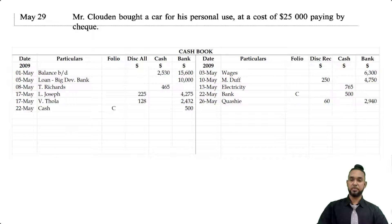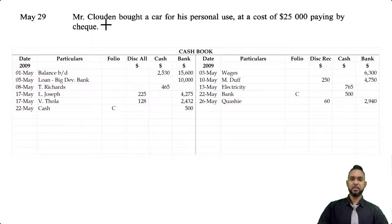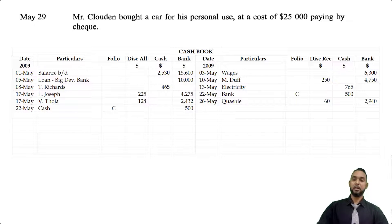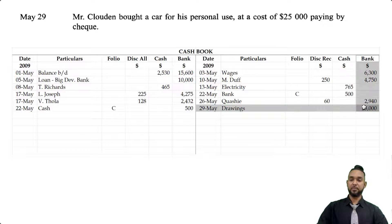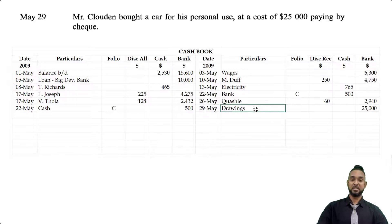Mr. Cloudon bought a car for his personal use at a cost of $25,000, paying by check. The question many students ask is whether this transaction was outside the business. Based on experience and consultation with other teachers, this is drawings — Mr. Cloudon used the business's money to pay for the car. So on the credit side under the bank column, you see $25,000, and because it's money the owner is withdrawing for personal use, it's classified as drawings in the particulars column.